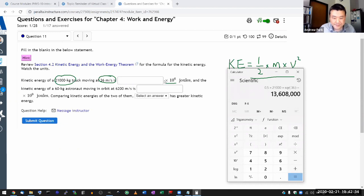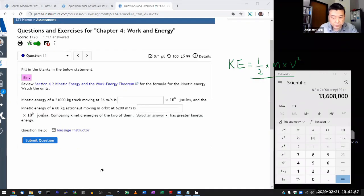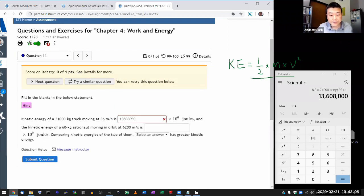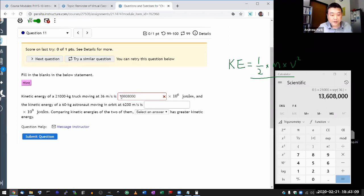And that's actually why I have this times 10 to the 6 joules. So I don't put this whole thing in. If I were to do this, 13608000, it'll say it's wrong. And it's wrong for a very simple reason that the answer I gave is basically 13608000 times another 6 zeros, 10 to the 6. So that's not the correct answer.